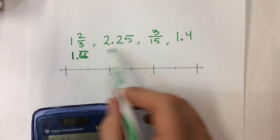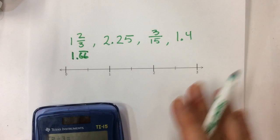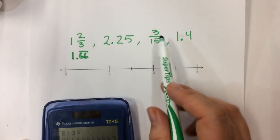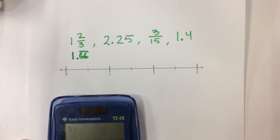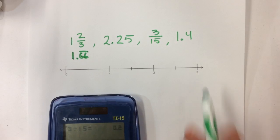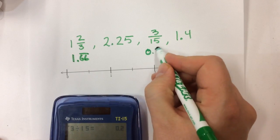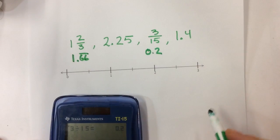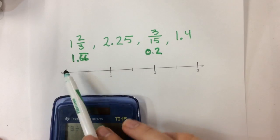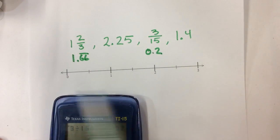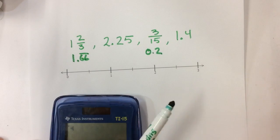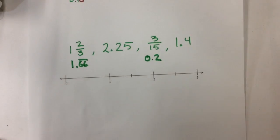2.25 stays the same — that's not going to change. Then 3 fifteenths: that is going to change, so 3 divided by 15, and in that case this is 0.2. Now I have my numbers all turned into decimals, and now I need to turn my attention to the number line.